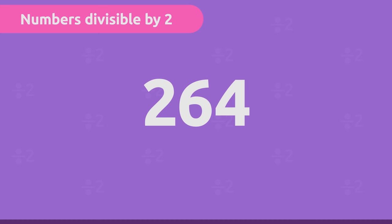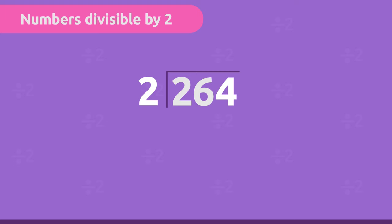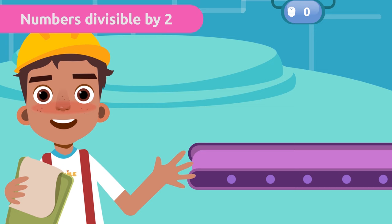Let's give it a try. To figure out if a number is odd or even, we have to look at its last digit. The last digit of 264 is four, which is an even number. So 264 is even, and it should be divisible by two. Let's test the rule. The remainder is zero, and we have proven that the divisibility rule of two works. Fantastic! No robot was left over.